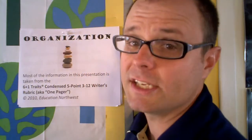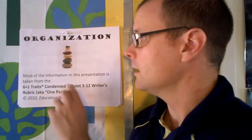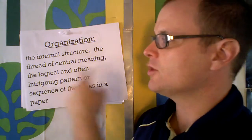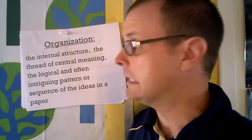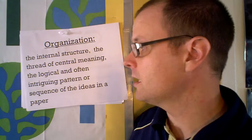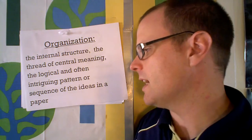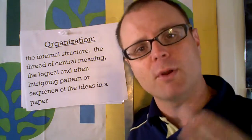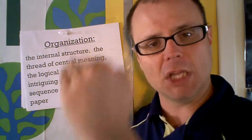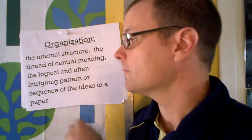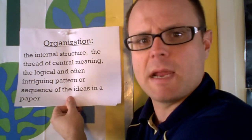The second trait is organization. Organization is defined as the internal structure — like the skeleton — the thread of central meaning, the logical and often intriguing pattern or sequence of the ideas in a paper. It's the way the paper is put together and ordered. It needs to be logical, make sense, enhance understanding, and keep the reader attentive. It's like the skeleton to the body of your paper.